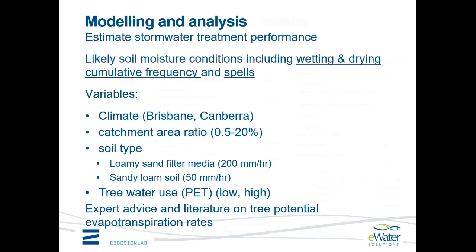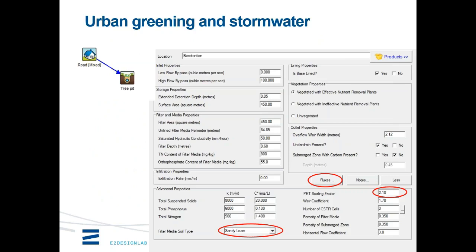Key things we dealt with: the filter media soil type, varied between sandy loam and loamy sand depending on the soil, which influences the equation in MUSIC that calculates hydraulic conductivity relative to soil moisture. We also varied the PET scaling factor, which calculates what the PET for the system is relative to the standard PET fed into the model — higher for high water use, lower for low water use. In MUSIC version 6.2 you can export a flux file and get the bioretention soil moisture directly; when we did this work, we were exporting files from the back end and post-processing, but it's much easier to do now.